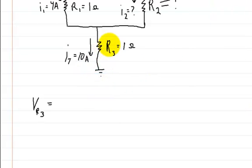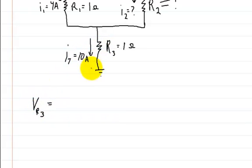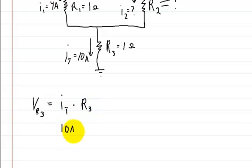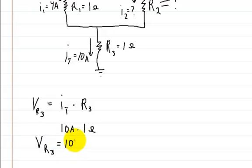Let's start off by solving for the voltage on this resistor. In order to solve for the voltage here we need to know the current and the resistance, and since we know both of those we can figure it out. So the voltage on R3 is going to be equal to the current going through it, IT, times the resistance of R3. IT is 10 amps times R3 which is 1 ohm, so the voltage on R3 is equal to 10 volts.